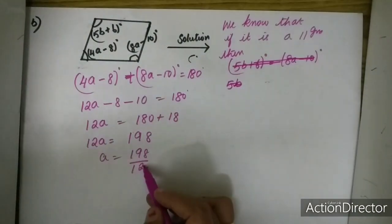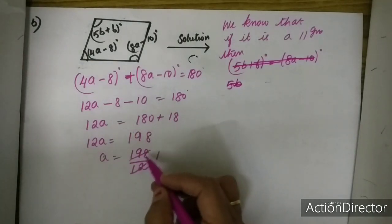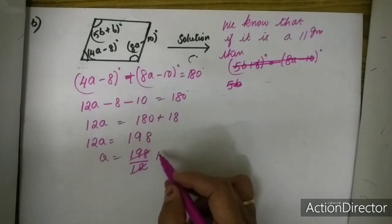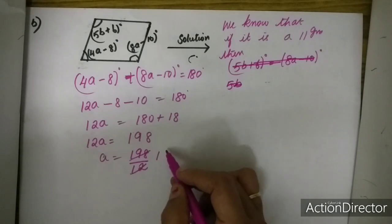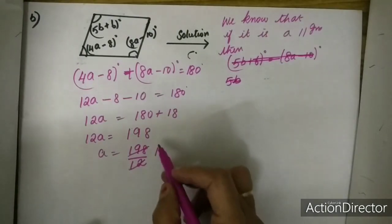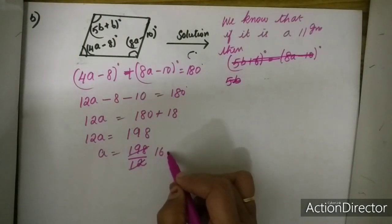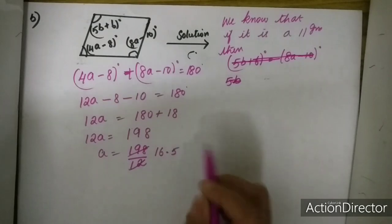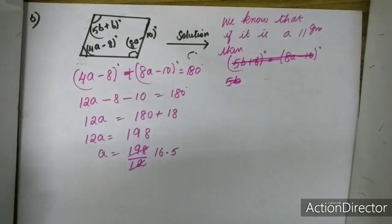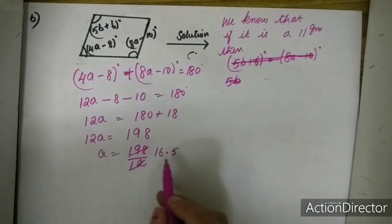12A is equal to 198, so A is equal to 198 upon 12, which is equal to 16.5. So the value of A is 16.5.